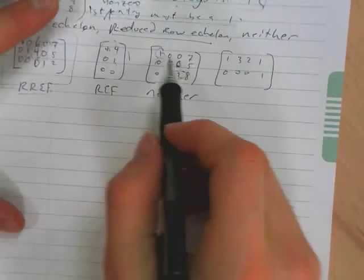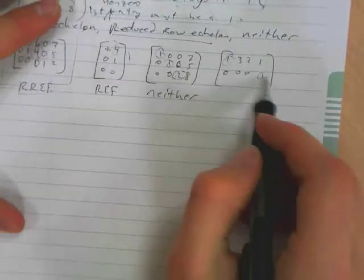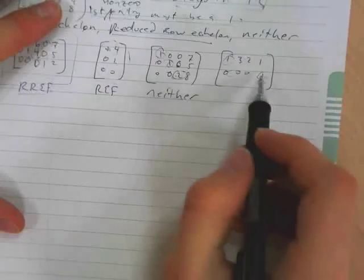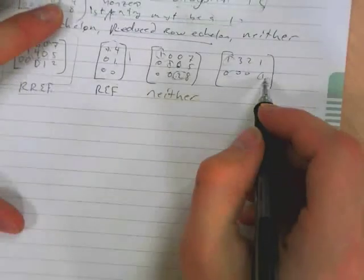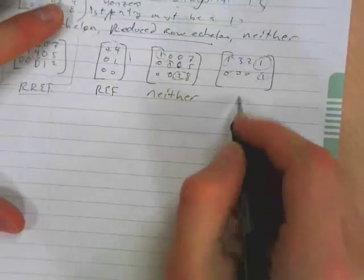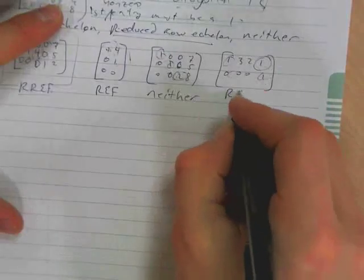First non-zero entry has to be a 1. 1, 1, 1, zeros. Huzzah! And look above my first entry 1s. There's something there. So this is row echelon form.